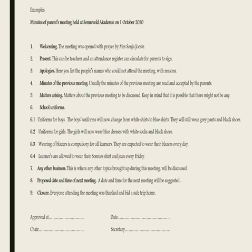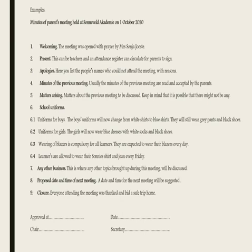Point 8 is a proposed date and time of the next meeting. Normally a date and time is suggested and people agree or disagree — often they agree on the first date given, though things can happen that may require rescheduling. Then finally point 9, the closure, is where the meeting ends. Everyone attending will be thanked and bid a safe trip home. At the end of the minutes there are four extra things: 'approved at' followed by the place name, the date corresponding to when the meeting was held, the chair — the main person leading the meeting — and the secretary, who takes notes and assists the chair.